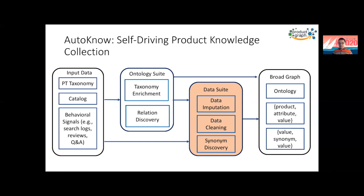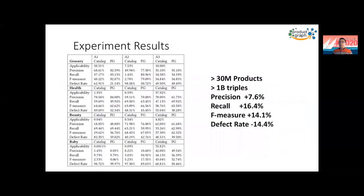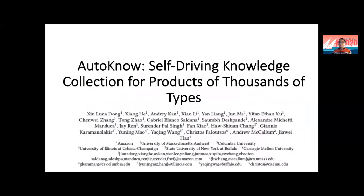I'm going to skip the technical details — please look at the details in the paper. For our experiments, we tested on four major product domains with over 30 million products and over one billion triples. You can see that precision, recall, and F-measure all improved significantly, and we also reduced defect rates. Autonome is a collaboration between Amazon scientists, engineers, and researchers from a couple of universities. You're welcome to check our paper and send us an email if you have questions.